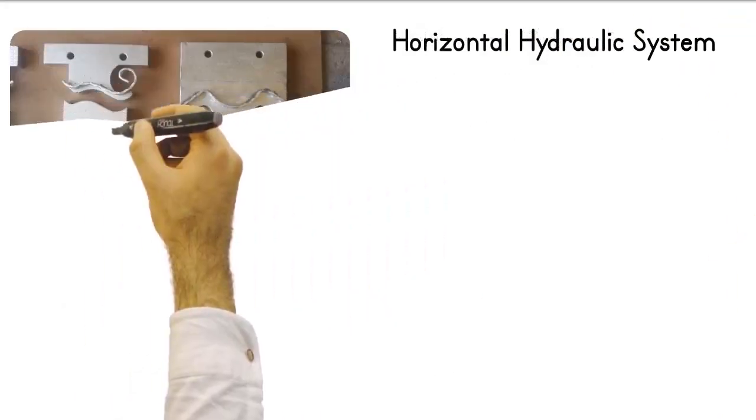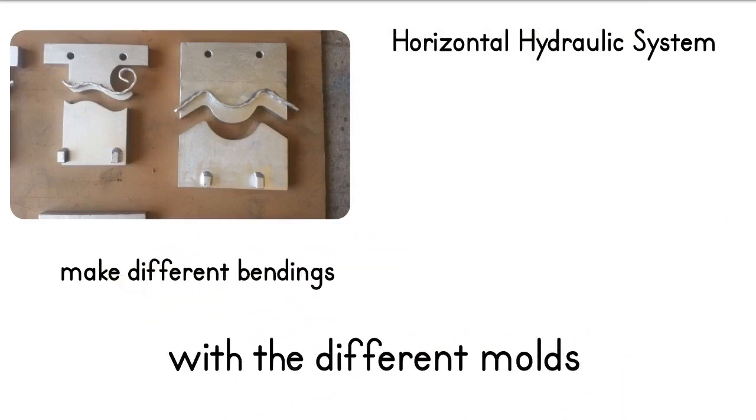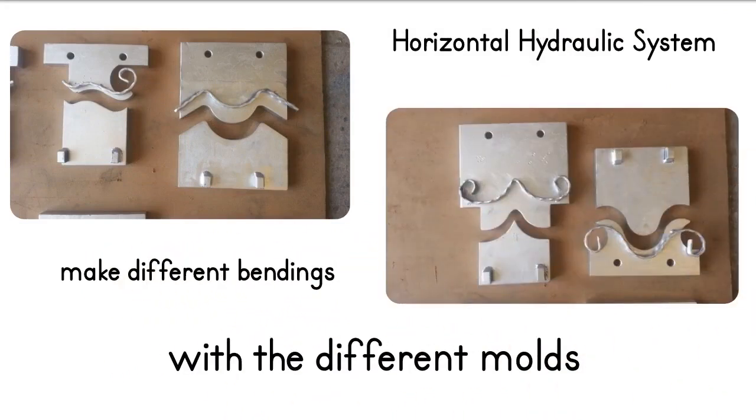With this machine, which is actually a horizontal hydraulic press, it is possible to make different bendings with the different molds you put in front of it.